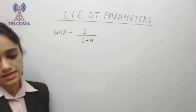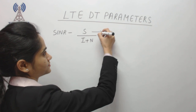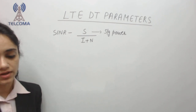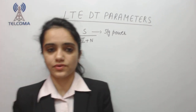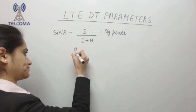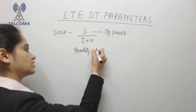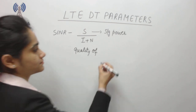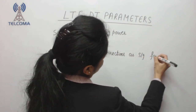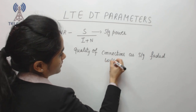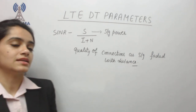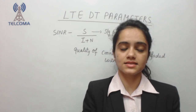In the SINR formula, S is the average received signal power, I is the average interference power, and N is the noise. SINR basically tells us the quality of the connection as the signal fades with distance. As the signal starts fading with distance, we see the corresponding change in interference and noise captured by SINR.